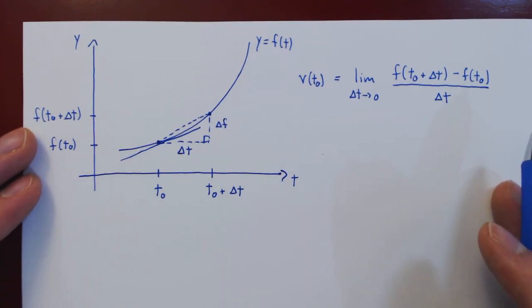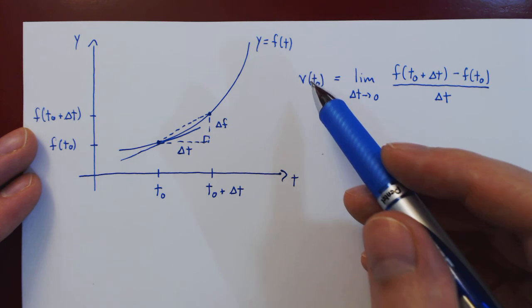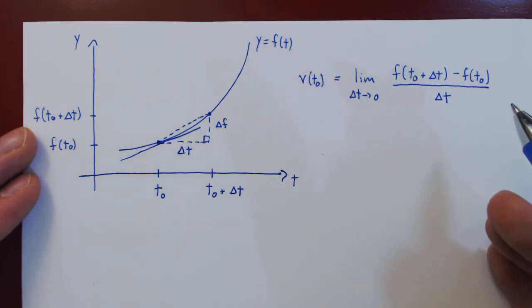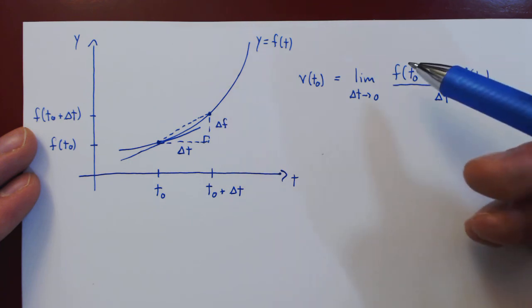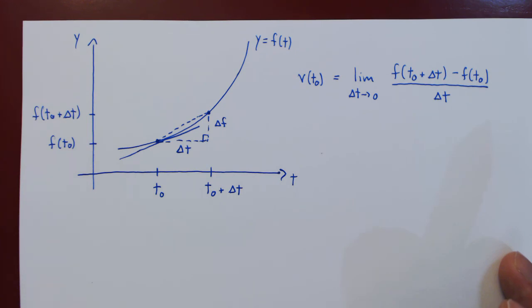So whenever you want to find the instantaneous velocity of an object at a given point in time, feel free to use either formulas, the one in the previous video or this one, as they are both equivalent.